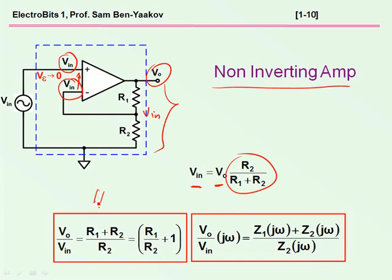which, of course, can be, then, used to get the output-to-input voltage ratio, which, again, turns out to be ratio of resistors.